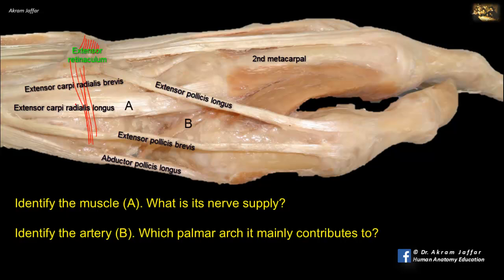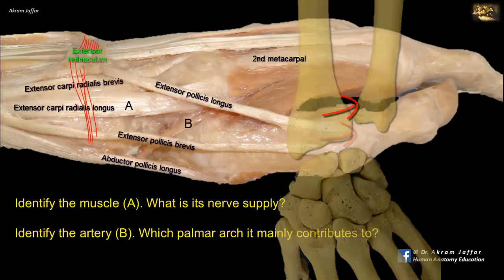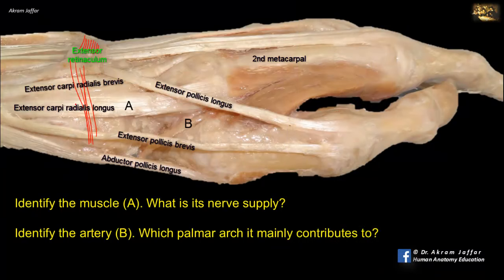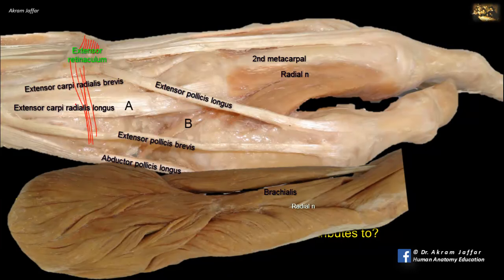The extensor carpi radialis brevis tendon is attached to the base of the third metacarpal bone and is located more medially. The groove on the medial side of the dorsal tubercle lodges the tendon of extensor pollicis longus, where the tendon changes direction against the dorsal tubercle of the radius. Muscle A, extensor carpi radialis longus, being an extensor muscle, is supplied by the radial nerve. The radial nerve spirals in the posterior compartment of the arm to appear at the lateral side of the anterior compartment proximal to the elbow, where it lies between brachialis on one side and brachioradialis and extensor carpi radialis longus on the other, supplying both these muscles.